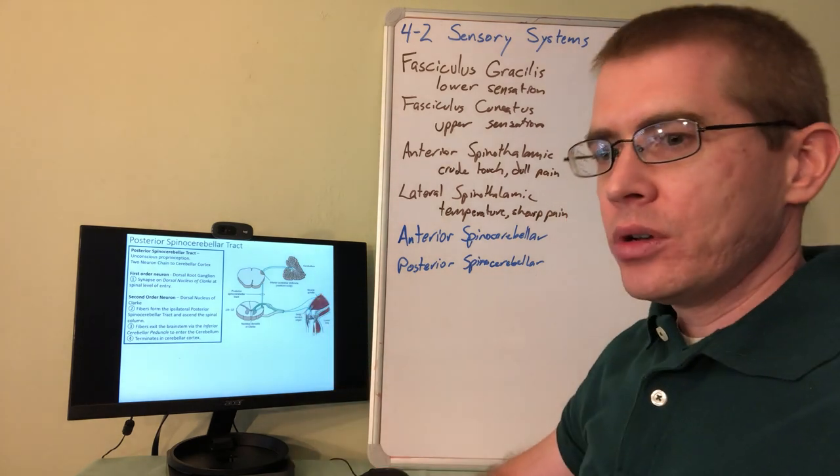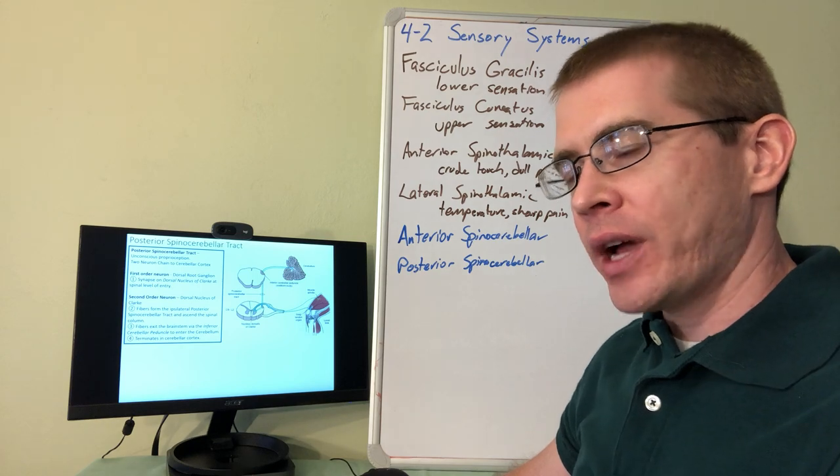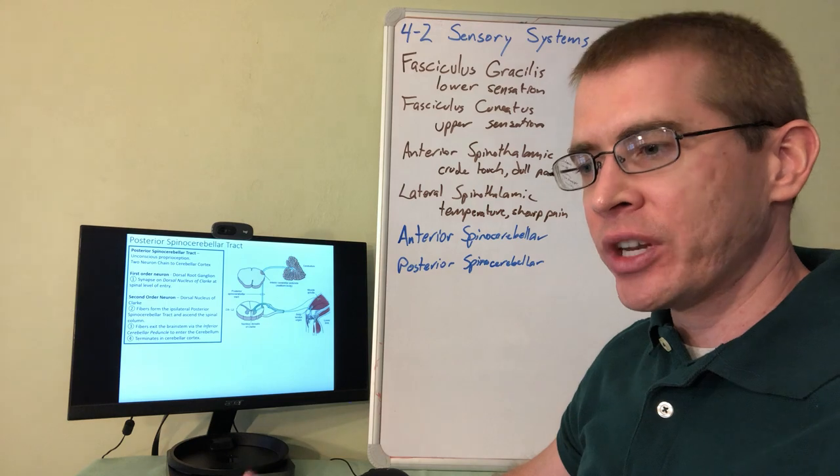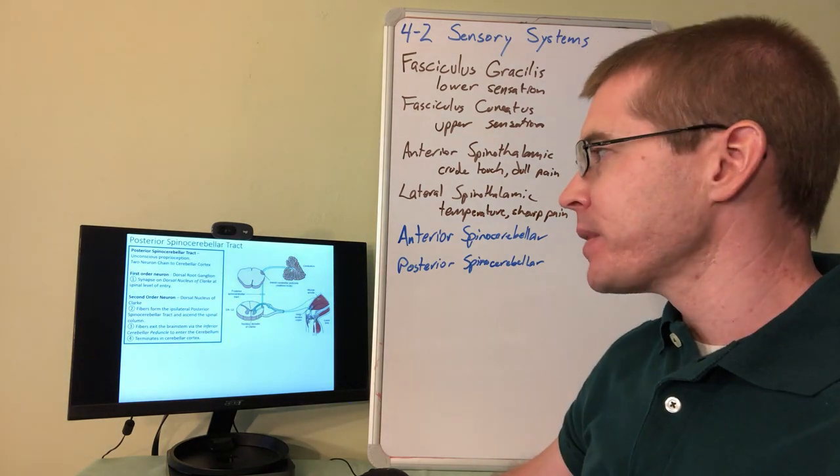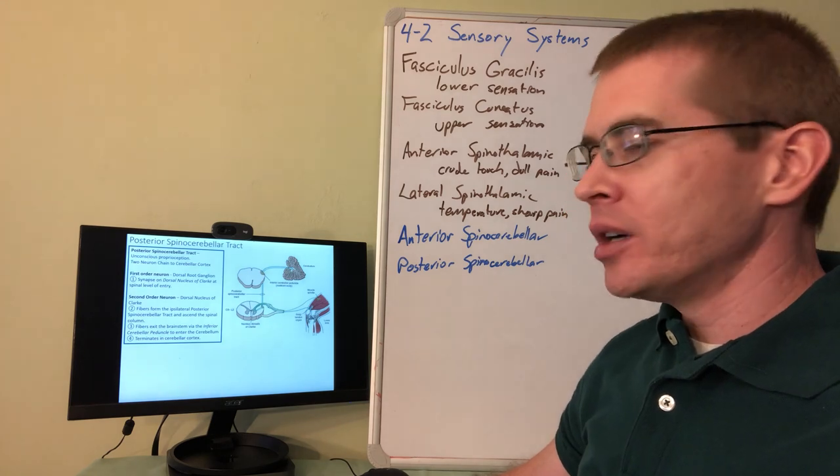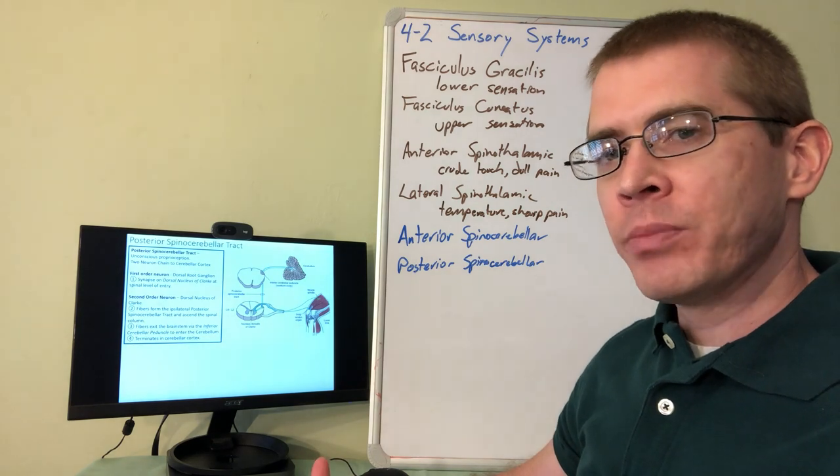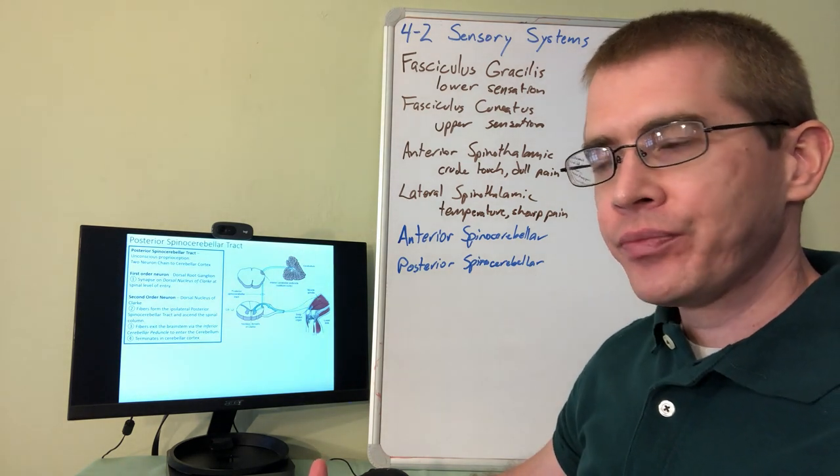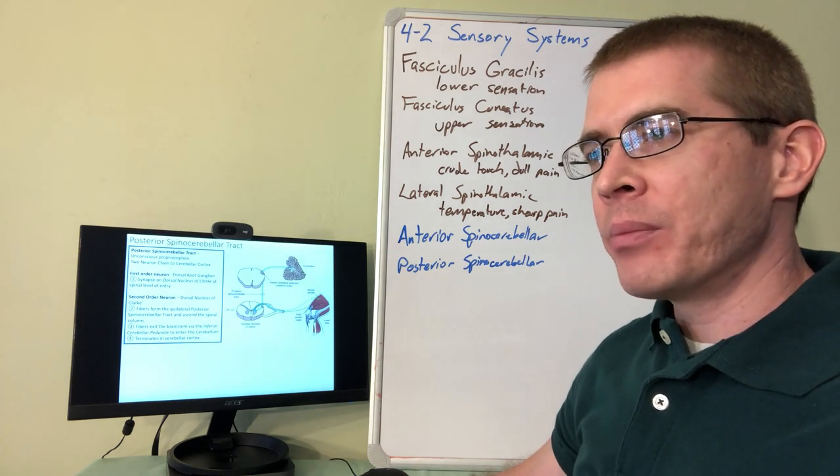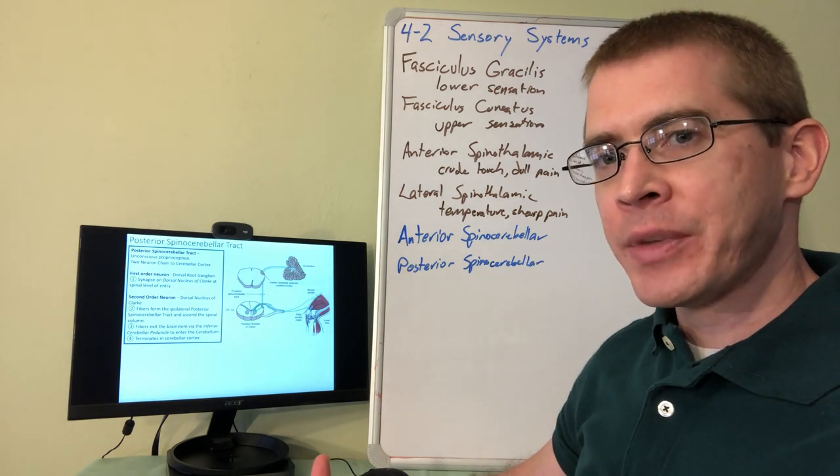Now we have two automatic non-conscious sensory tracts that I'm going to tell you about and those are the spinocerebellar tracts, the posterior and the anterior. So these are responsible for that unconscious proprioceptive sense, the sense of where our body is in space, and so this information helps our cerebellum automatically balance our body by modulating our core and appendicular muscles.